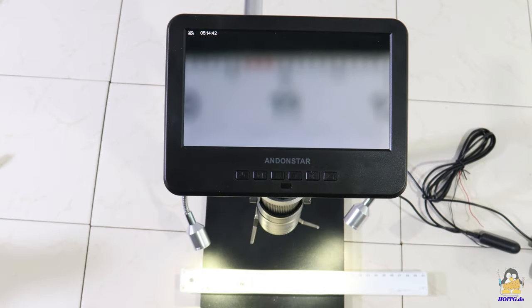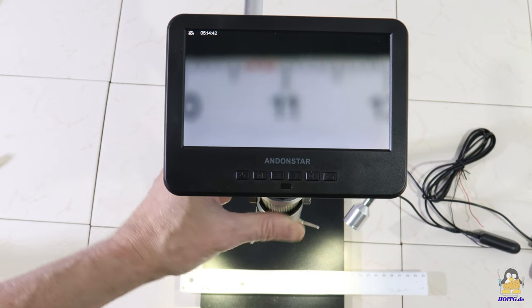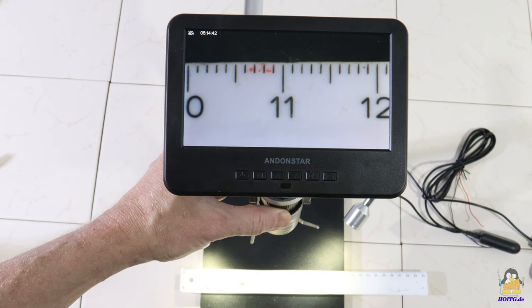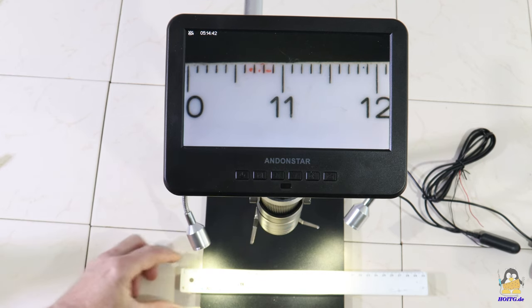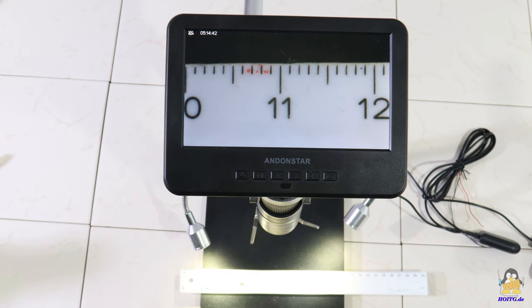There is a lot of cheating when it comes to the magnification factor, so I'll give you a rough estimate of what small structures can be captured with the optics. I start with lens A, which is first brought to the maximum height. The camera captures 22mm of the ruler.